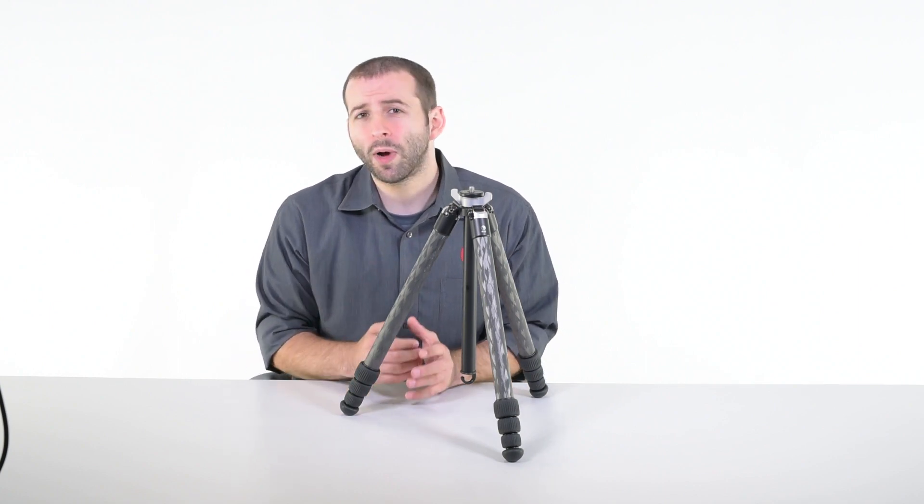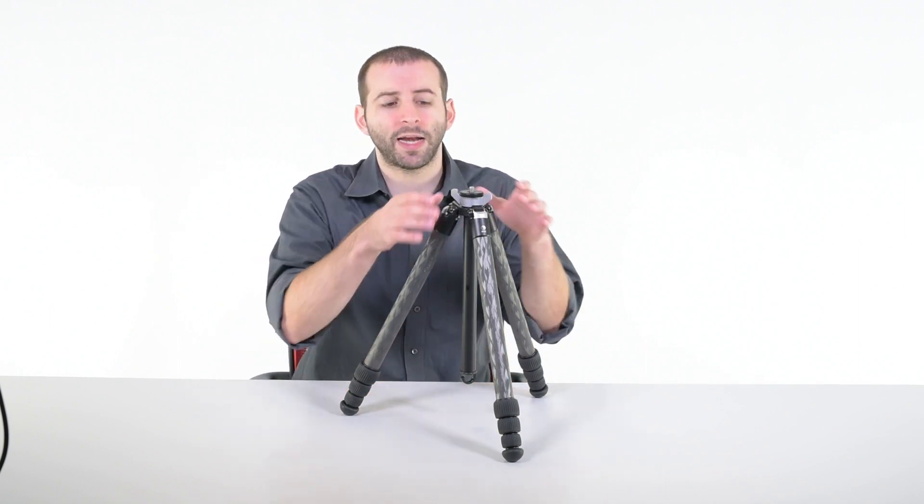With the column fully extended, you're going to have essentially the least stability possible. Because with any tripod, no matter the manufacturer, the most stable position is right at the apex of the tripod. But in some situations when the extra height is essential,